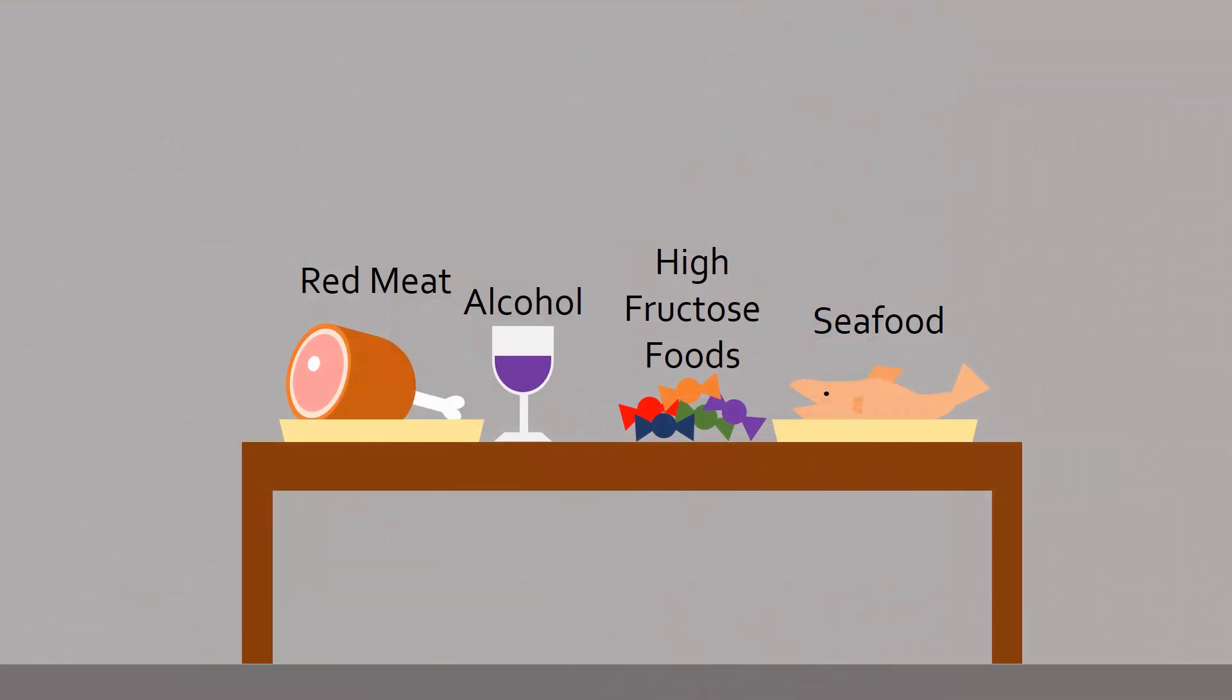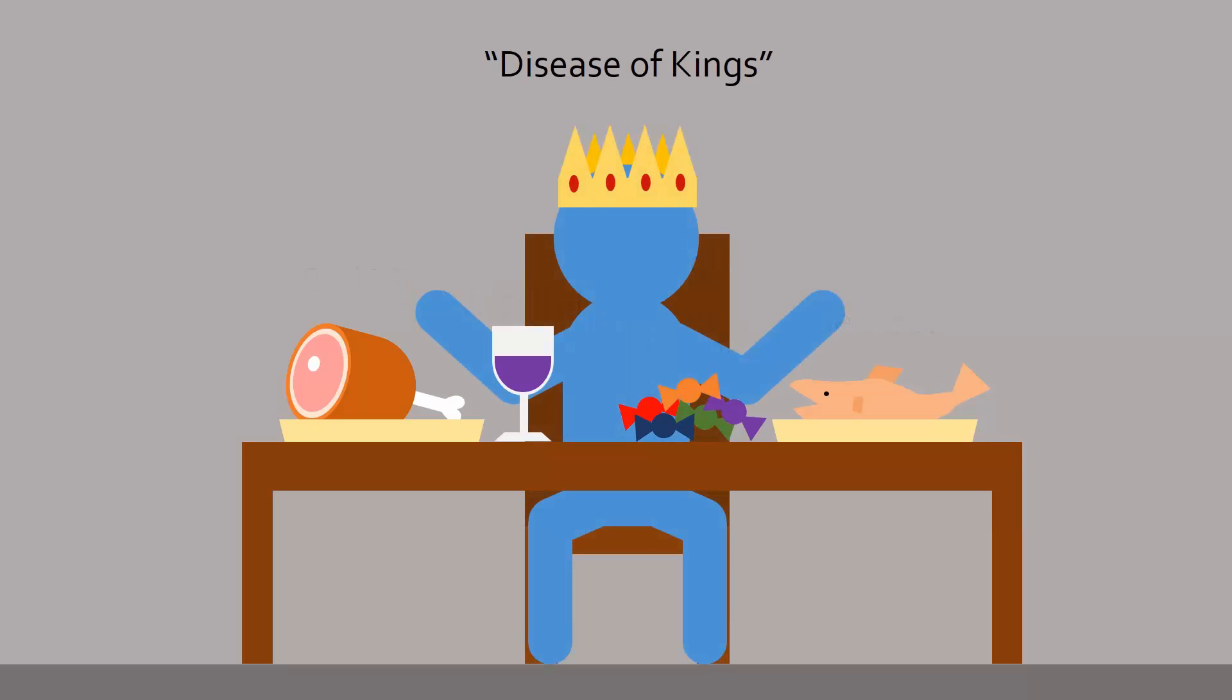Treating hyperuricemia often involves changing one's lifestyle. Excess consumption of meat, seafood, alcohol, and fructose such as in candy and pop drinks are all linked to gout, possibly due to increased purine content or activation of purine breakdown. In fact, gout was originally known as the disease of kings, since in the past only royalty was able to excessively eat these food groups.